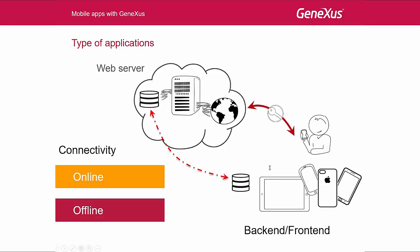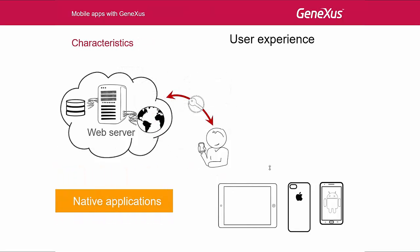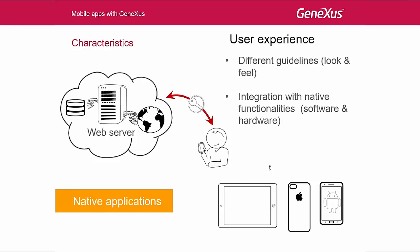Keep all this in mind. In a while, we will talk about the architecture of these types of applications, which are online applications. We know that the user's experience is an essential characteristic of smart device applications. Each platform has its own guidelines regarding the app's look and feel — that is to say, how the applications should look, how the actions should look, and so on. In addition, we will want smart device apps to integrate with the device's native features, both in terms of software and hardware.